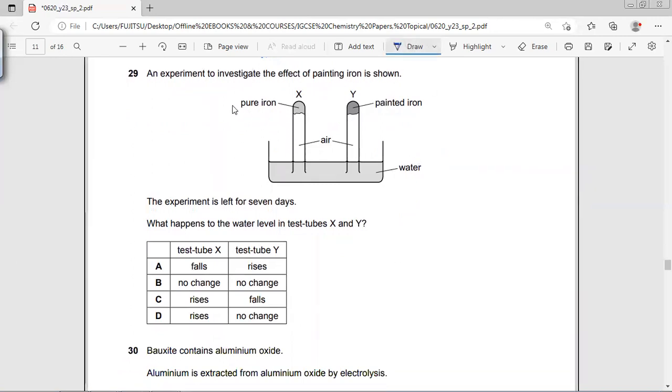Question about rusting. An experiment with the effect of painting iron is shown. The experiment is left for seven days. What happens to the water level? We know that this is pure iron, so this is going to rust. If this is going to rust, water is going to move up.